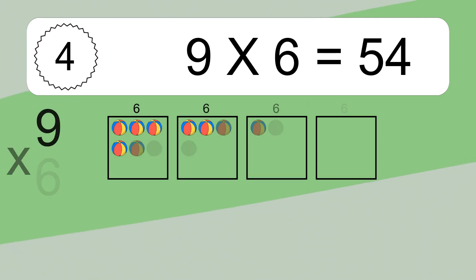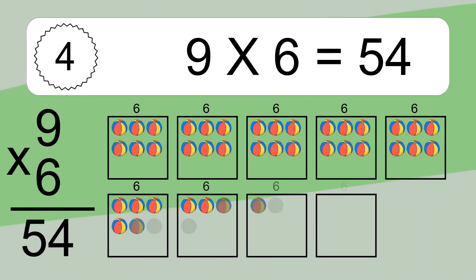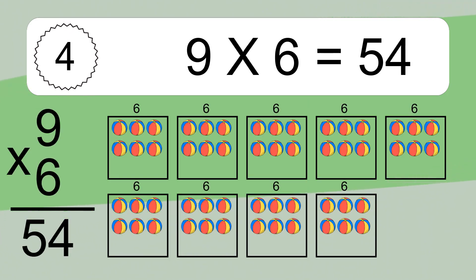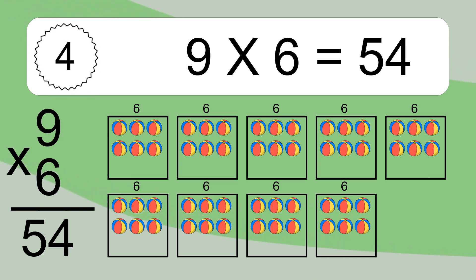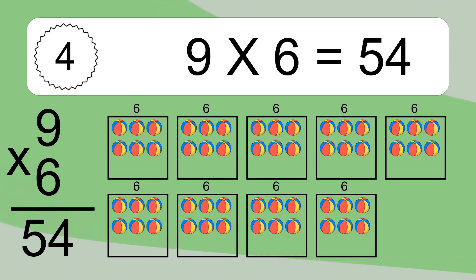Nine times six equals what? Nine times six equals 54. We have nine boxes and each box has six colorful balls inside. If you count all the balls in all the boxes together, you will have nine times six balls. This equals 54 balls.